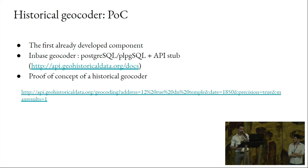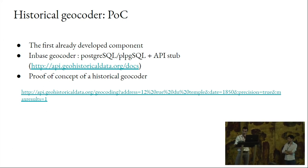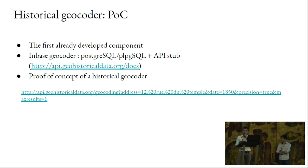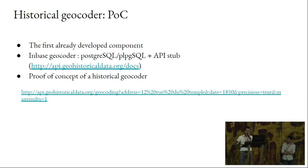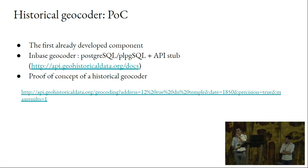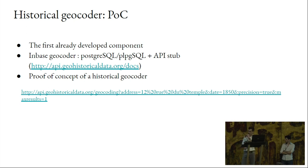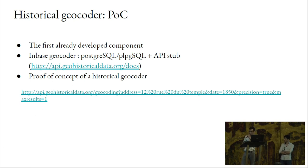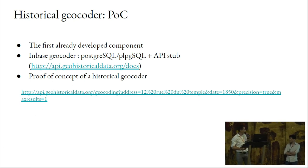We have already developed a proof of concept of a historical geocoder. We know what geocoding is, but we are going to add the temporal dimension. We have an in-database geocoder based on PostgreSQL with PL/pgSQL stored procedures and an API. It's a proof of concept of a historical geocoder — it works, and you can follow the link.